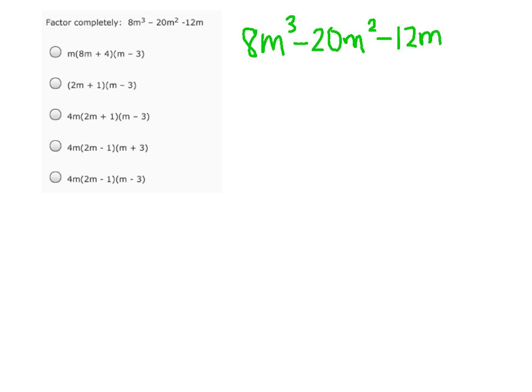The first thing we notice is that we can factor out an m, but we can also factor out 4 from all of these terms. So let's divide out a 4m, and what's left is 2m squared minus 5m minus 3.